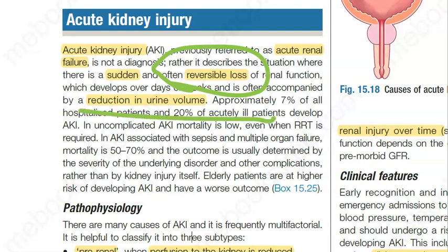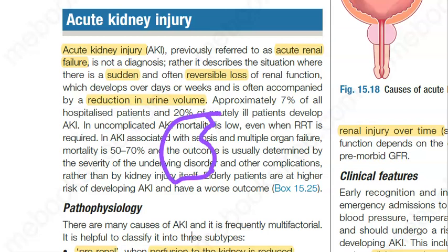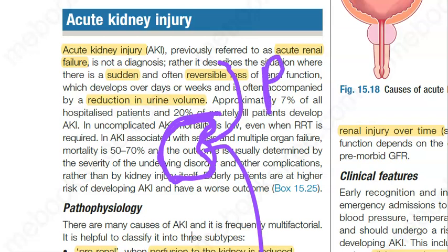There is reduction in urine volume. Why can there be reduction in urine volume? There are three causes. The three causes are: there is a pre-renal cause, there is a renal cause, and there is a post-renal cause.